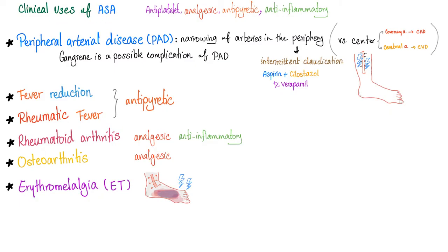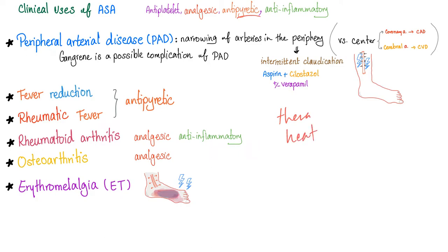Clinical uses of aspirin continued — peripheral arterial disease (PAD) or peripheral vascular disease. We have narrowing in the arteries in the periphery, not to be confused with coronary artery disease or cerebral vascular disease. When you have peripheral arterial disease, you get intermittent claudication and pain. Gangrene is a possible complication of PAD. Treatment includes aspirin, cilostazol, and you can add verapamil.